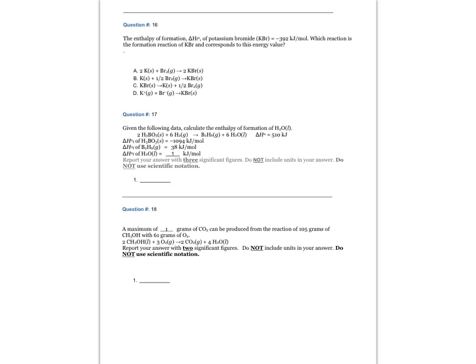The answer is B, one mole of potassium solid plus half a mole of bromine gas to make one mole of potassium bromide solid.